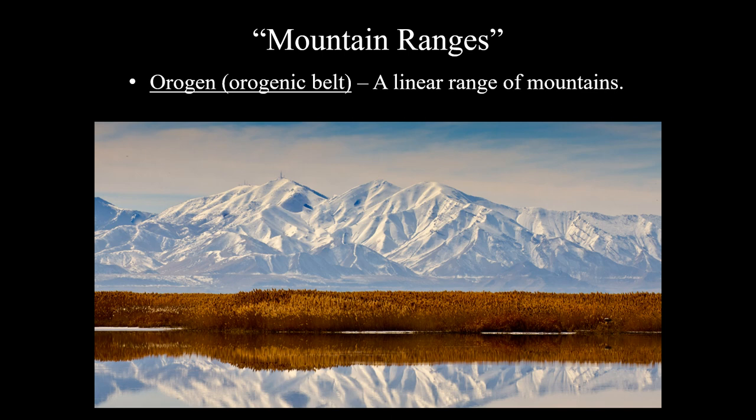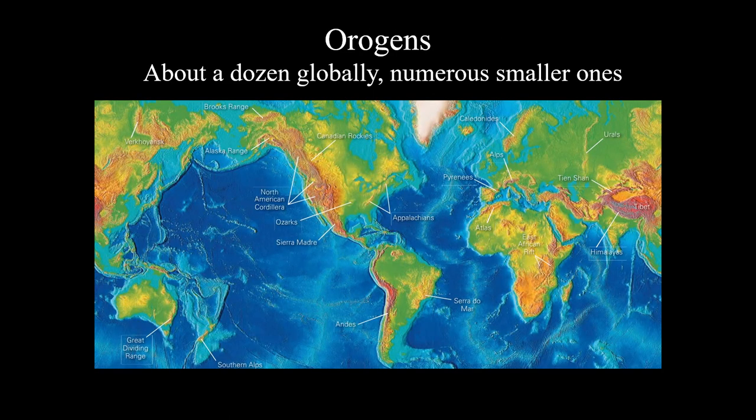When we think about mountain ranges, scientists call them orogenic belts — essentially a linear range of mountains. They're linear because most are associated with plate boundaries, which are defined by a line on a sphere. There are about a dozen major ones. You can see the Rocky Mountains of North America, the Rockies of Canada, and the Appalachian Mountains on the eastern seaboard of the US.